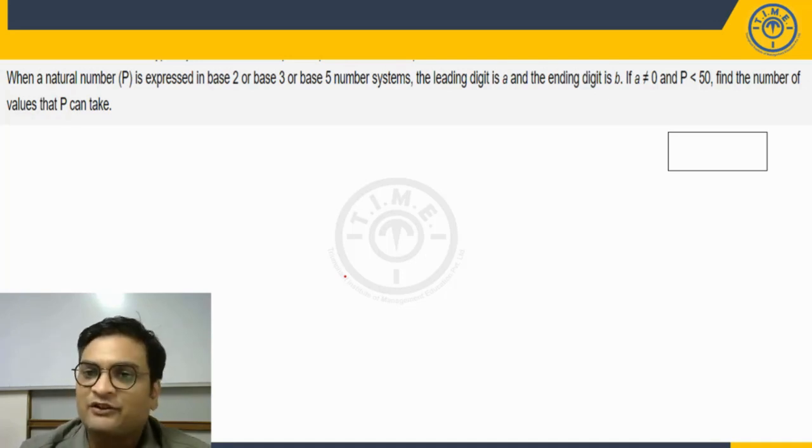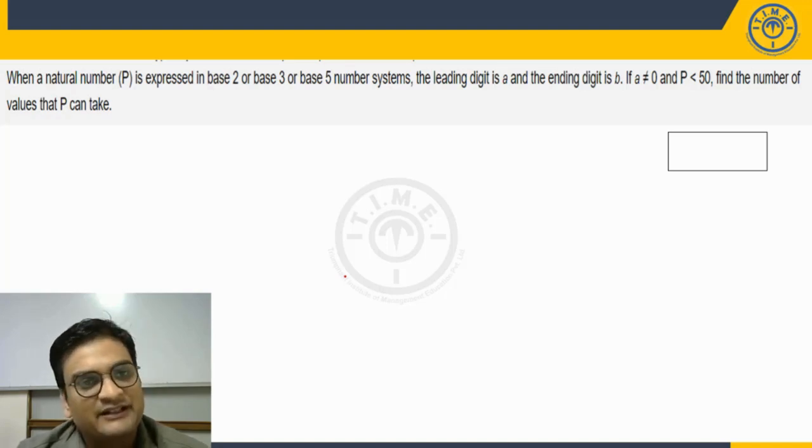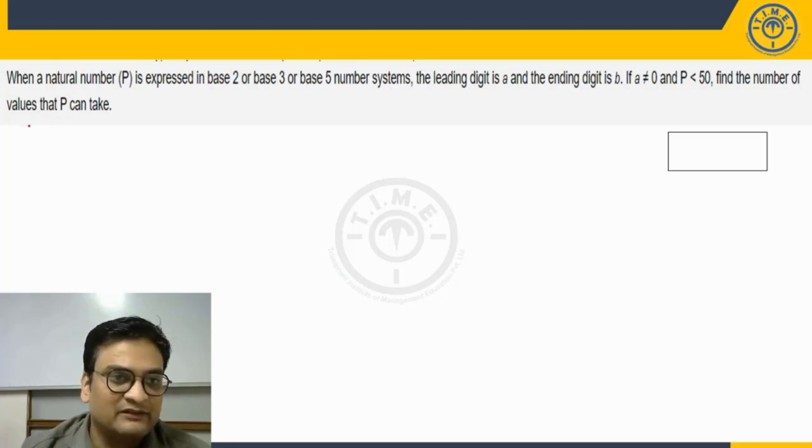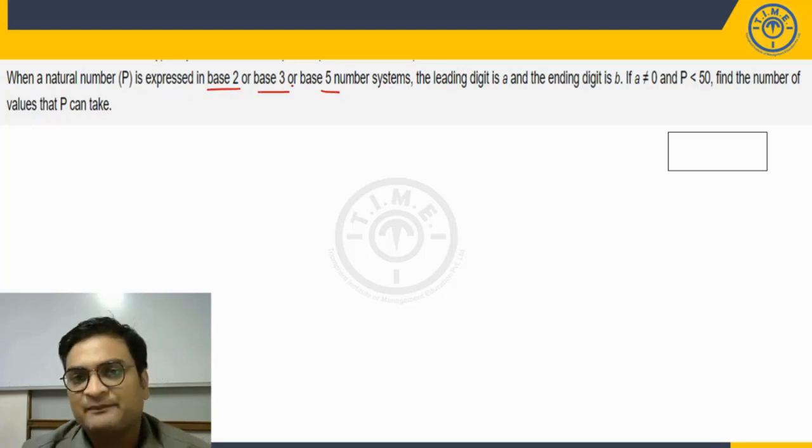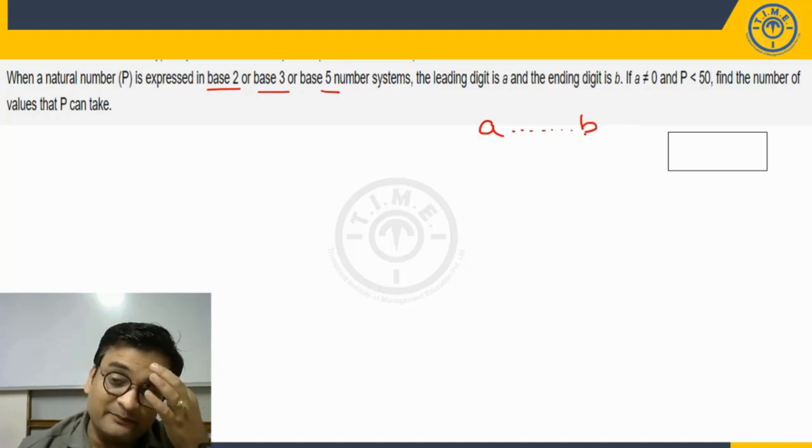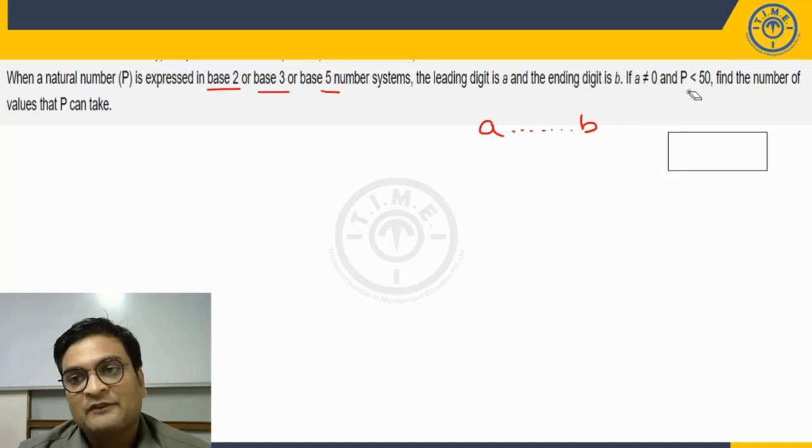We have one question on that line. You can pause the video now, give this question a try and then listen to the discussion. I will be starting with the discussion now. It says when a natural number P is expressed in base 2, base 3, or base 5, the leading digit is A and the ending digit is B. If A is not 0 and P is less than 50, find the number of values that P can take.